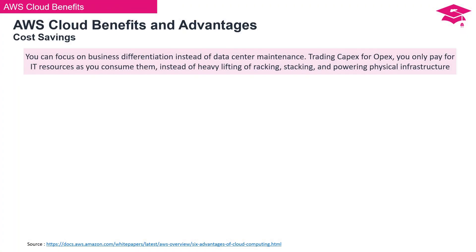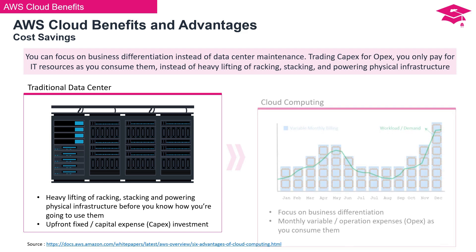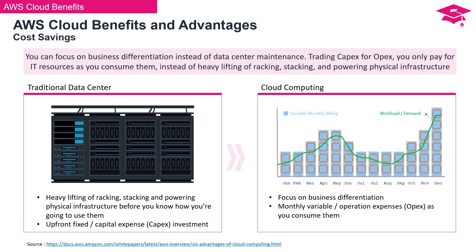The subsequent benefit is cost savings. With cloud computing, you can direct your focus toward business differentiation rather than data center maintenance. By trading capital expenditure (CAPEX) for operational expenditure (OPEX), you only incur expenses for IT resources as you consume them, eliminating the burden of racking, stacking, and powering physical infrastructure. In the realm of cloud computing, expenses are incurred as monthly variable operational expenses (OPEX) based on consumption, avoiding hefty upfront investments.